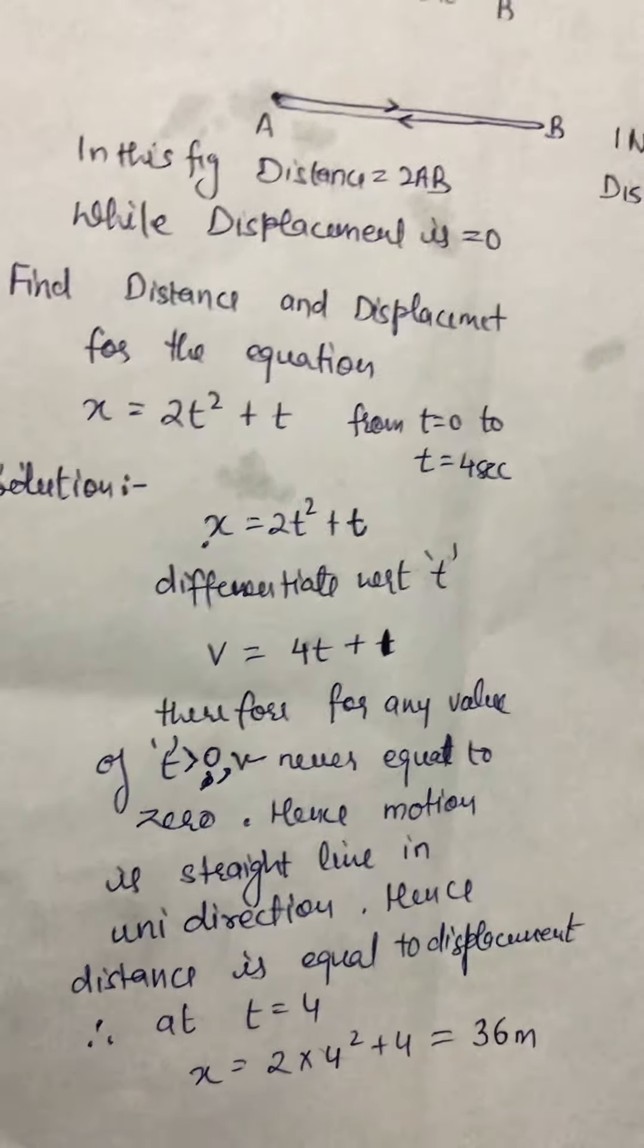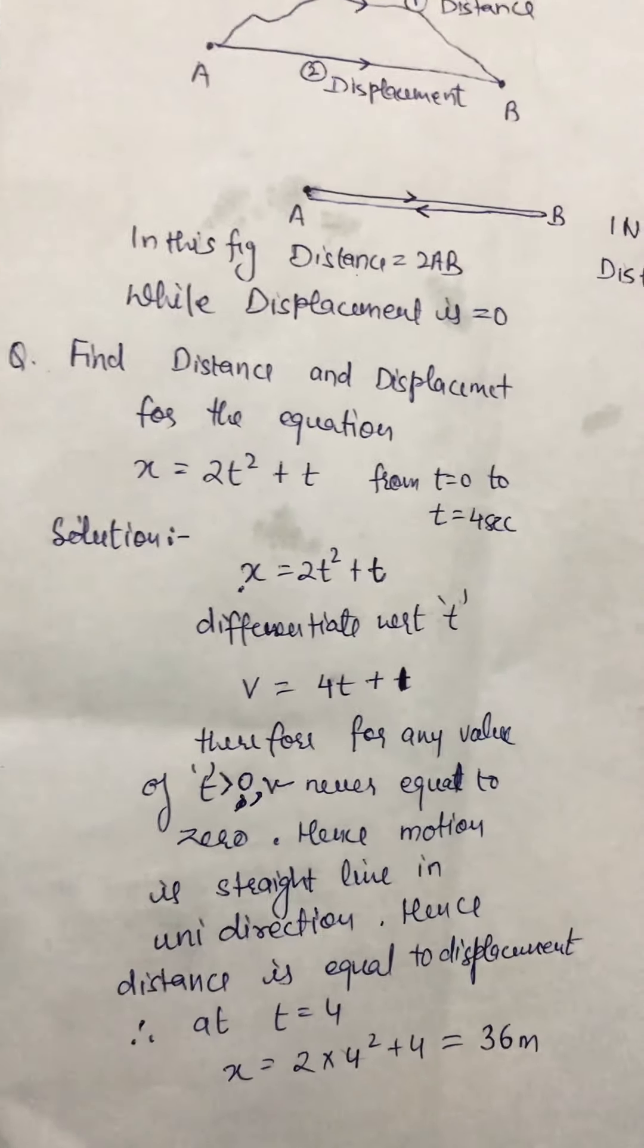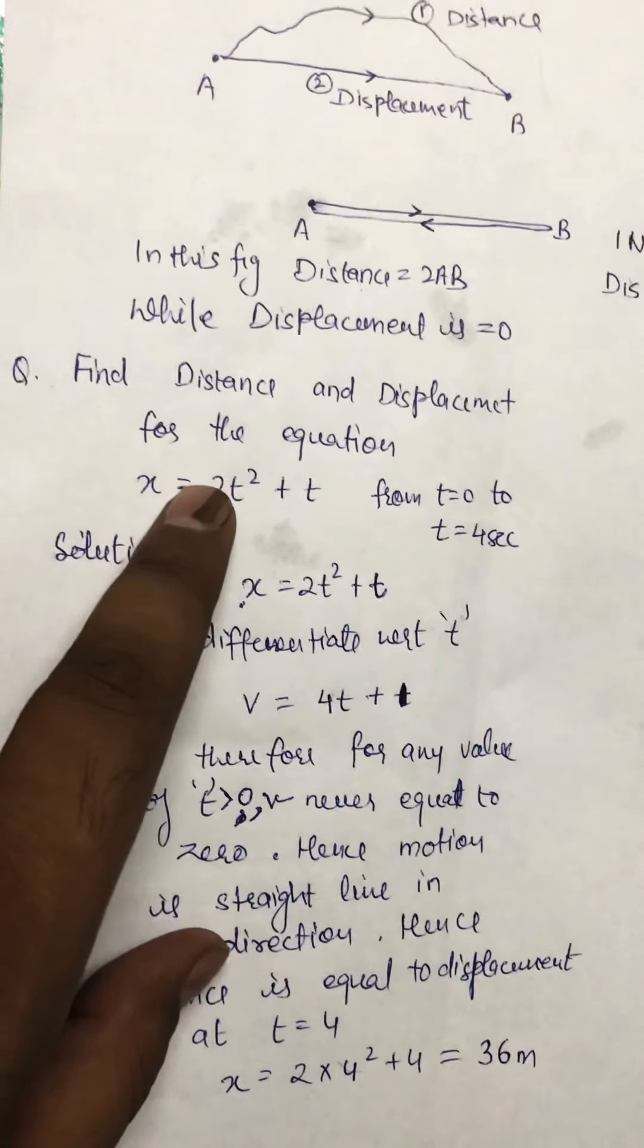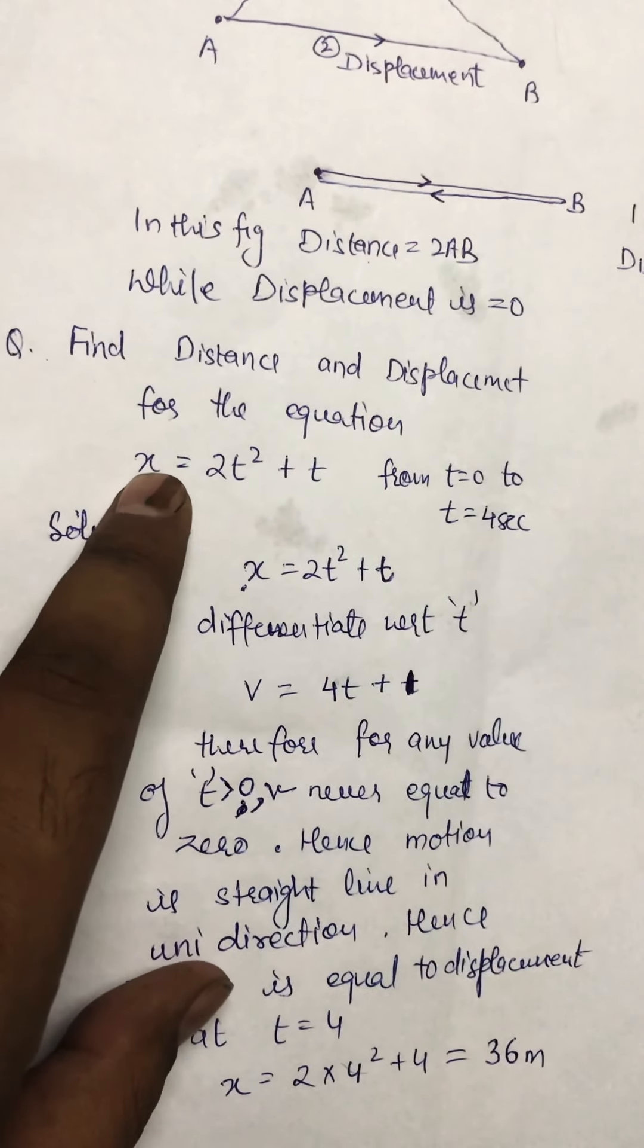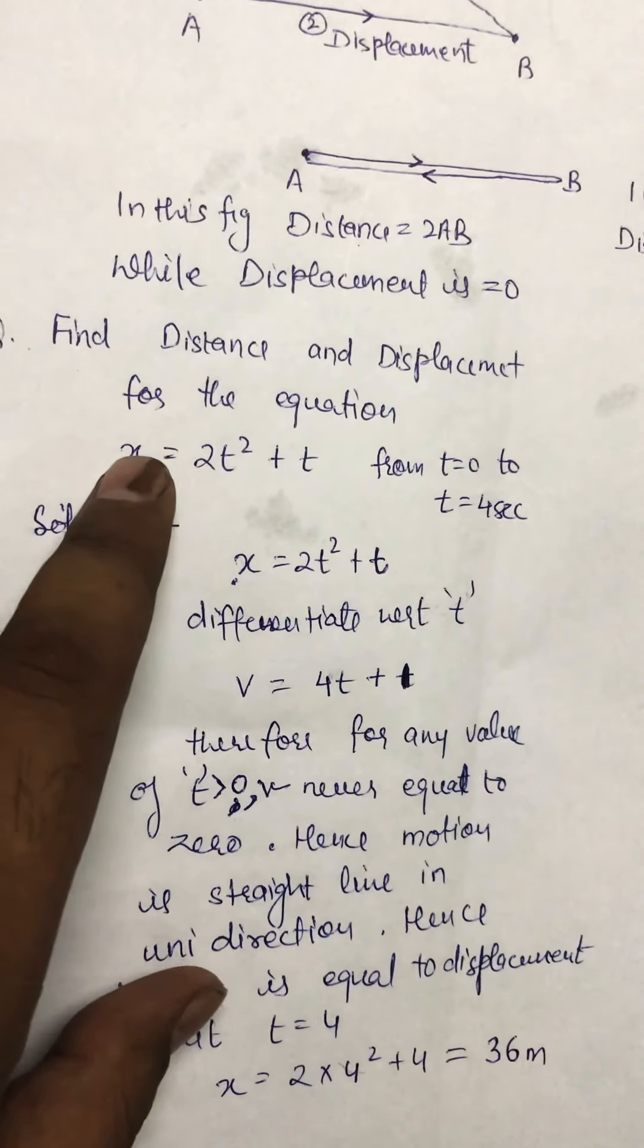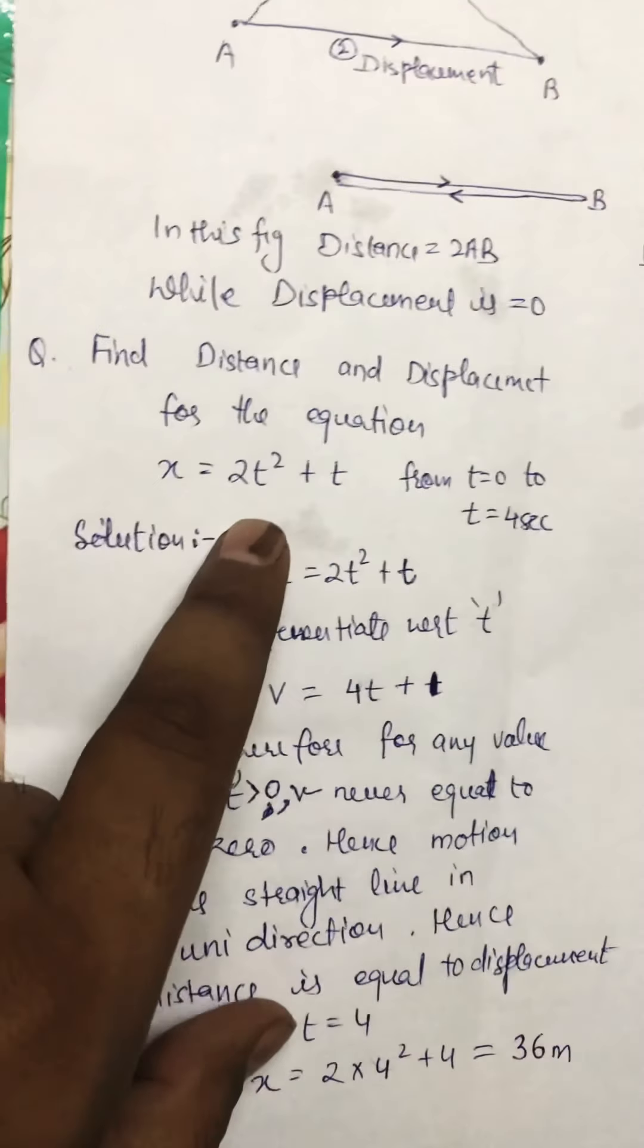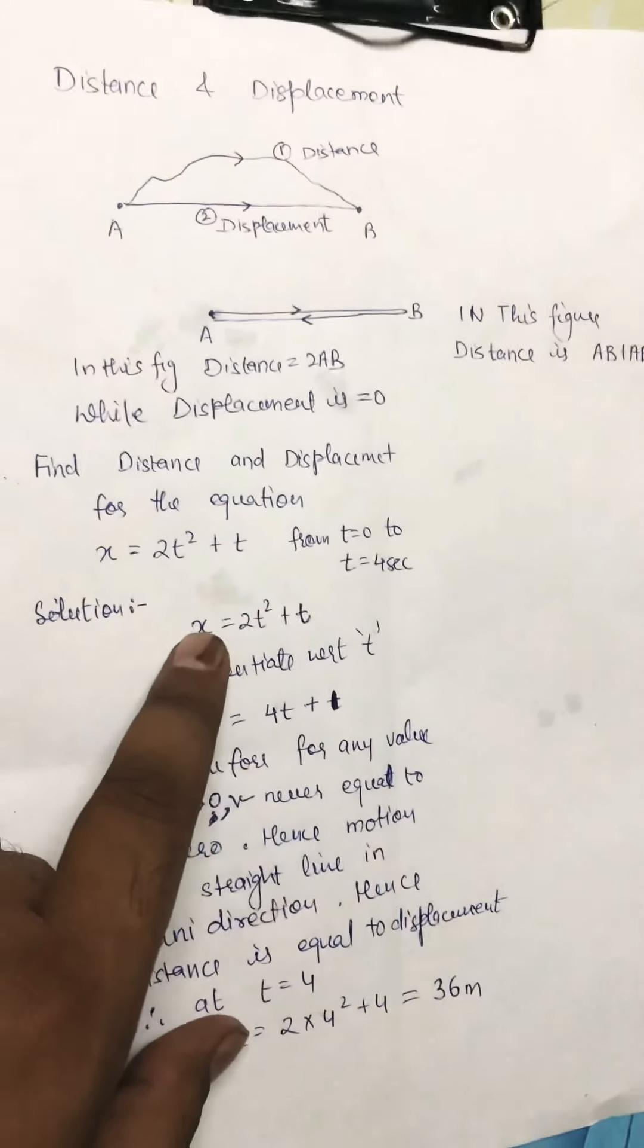So distance and displacement are the same in this question as the particle is moving along the x-axis, only in the positive x-axis direction. Thank you.